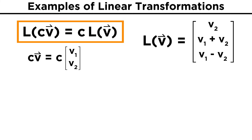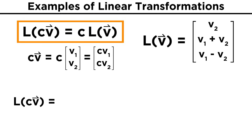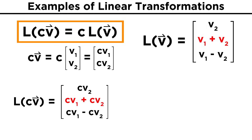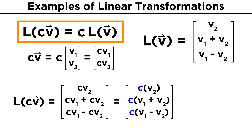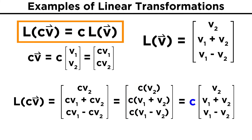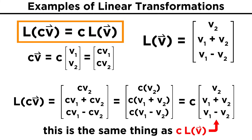Multiplying the vector V by C, our new vector becomes (CV1, CV2). Once we transform this new vector, we get (CV2, CV1+CV2, CV1−CV2). We can factor out the C from each element of the vector, and then pull the scalar out of the vector to obtain C times (V2, V1+V2, V1−V2). We already know that this vector is just the linear transformation of V, so we can write this as C·L(V). We have verified the first requirement.